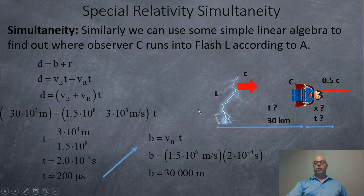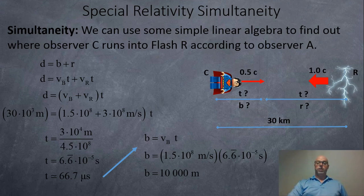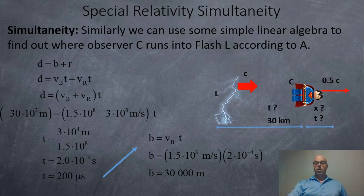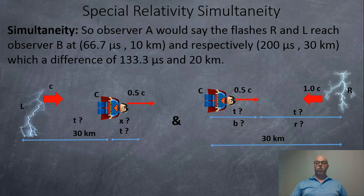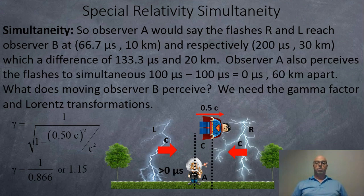And when would the left flash finally catch up to them? That would occur at 200 microseconds and 30,000 meters or 30 kilometers to the right. So there's a 20 kilometer gap there, and from 66.7 microseconds to 200 microseconds, there's a 133.3 microsecond gap, according to observer A. Observer B will not observe the exact same times and gaps, unfortunately. It's pretty tricky.